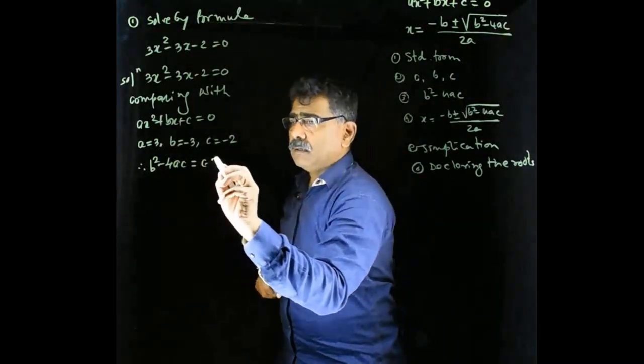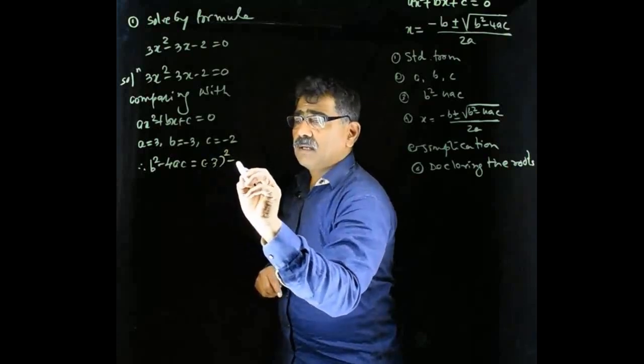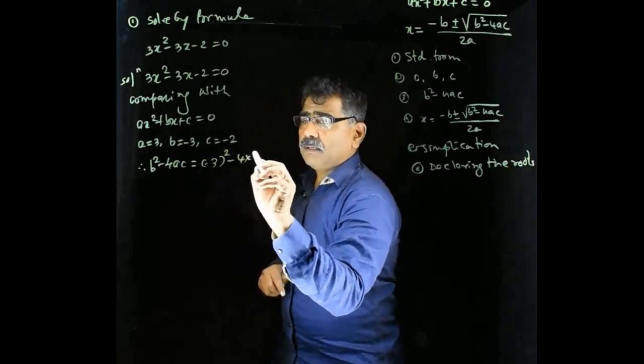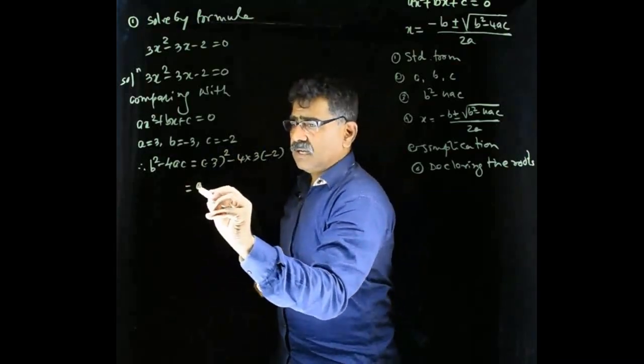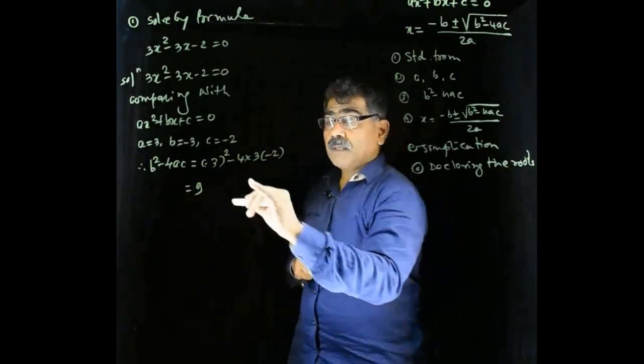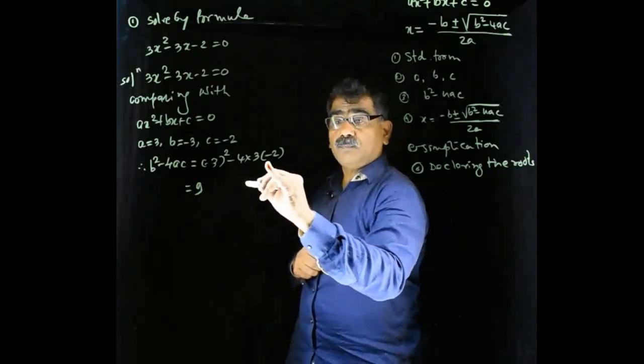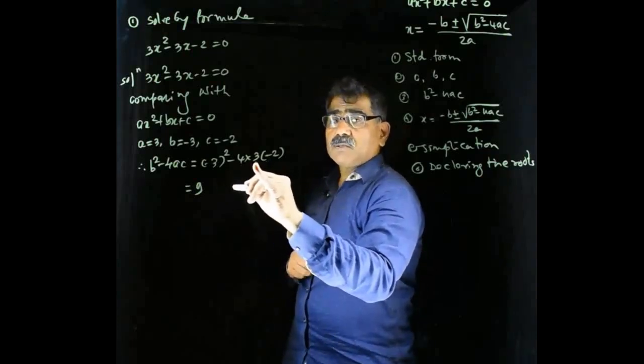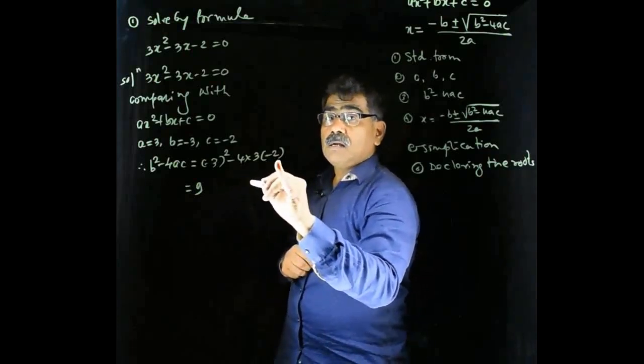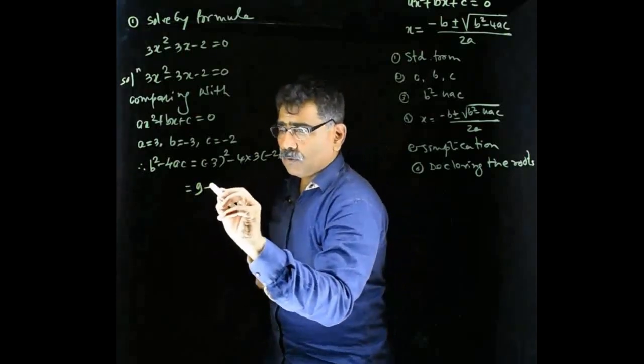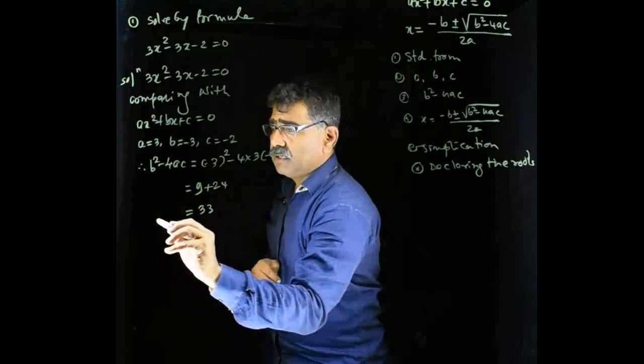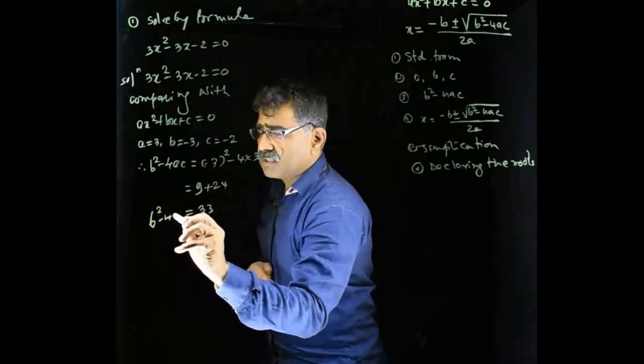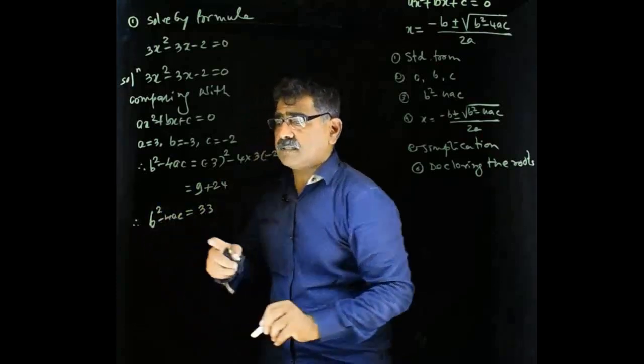b negative 3 the whole square, 4 into a, 3, into c, negative 2. That is 9. That is 9, square of 3. Negative 2 negative, positive. 4 of 3 is 12. 12 2's 24. And so, I got here value of b square minus 4ac as 33.